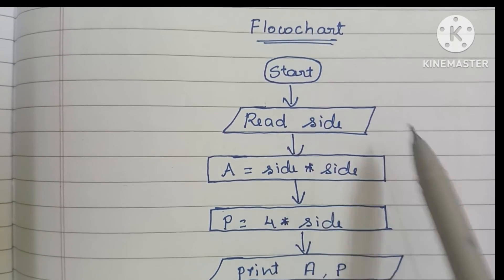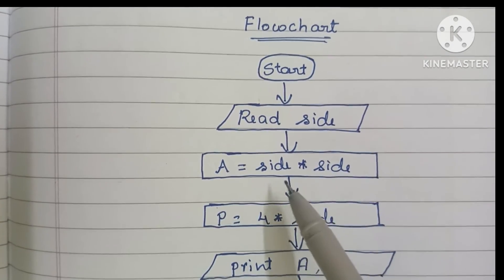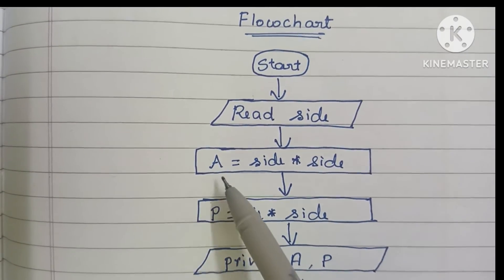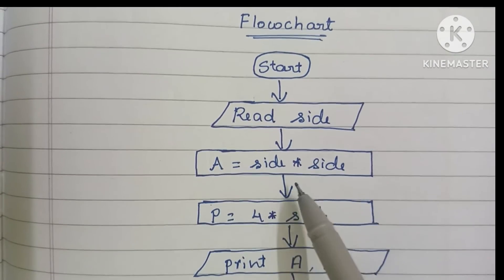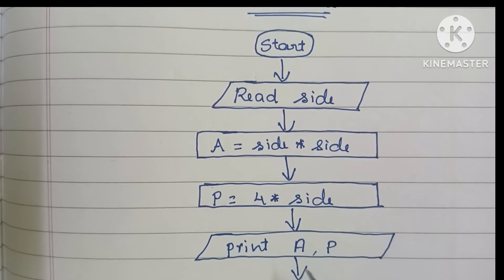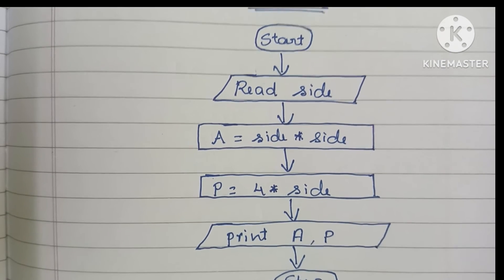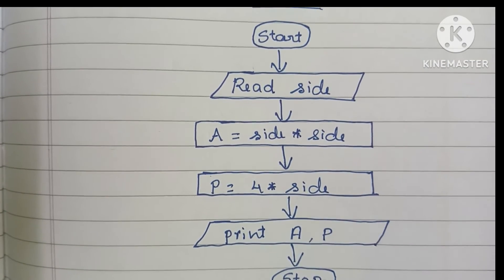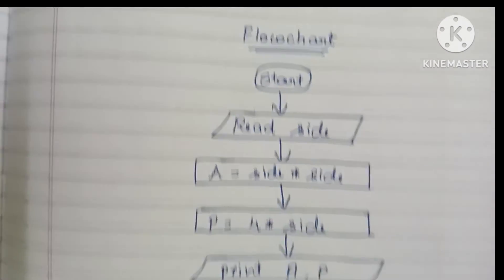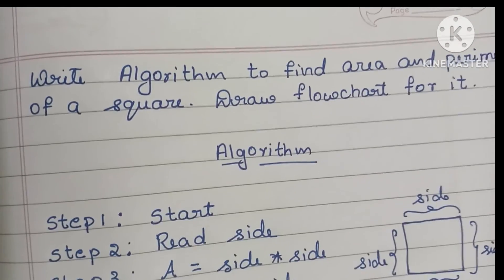The start statement is written within an oval shape. Next, the side value is written within a parallelogram shape. Next, formulas are written within a rectangular shape — area of a square equals side × side, and perimeter of a square equals four × side. The area and perimeter are printed within a parallelogram shape, and the flowchart ends with a stop statement. So this is the flowchart and algorithm to find the area and perimeter of a square.